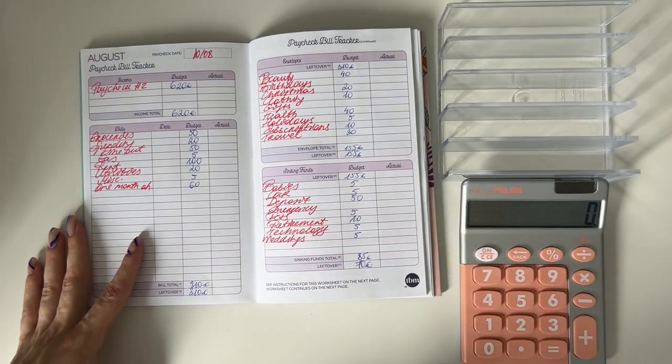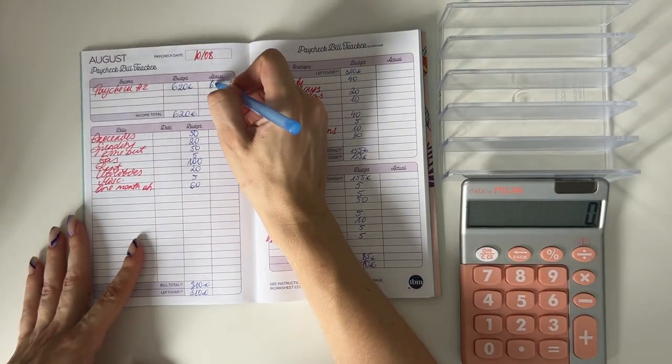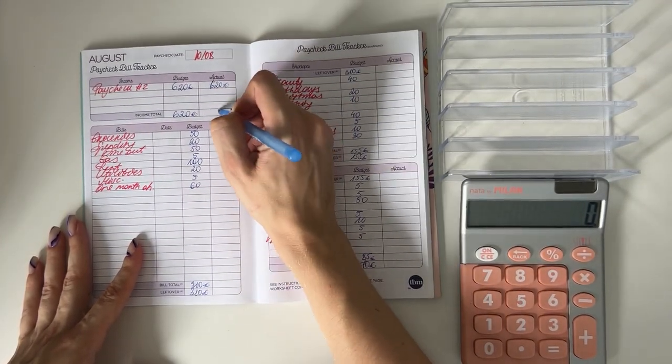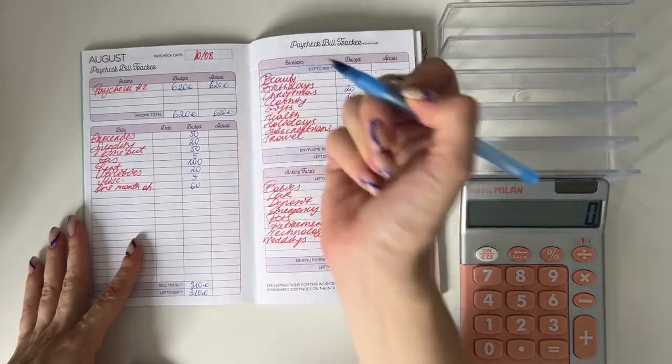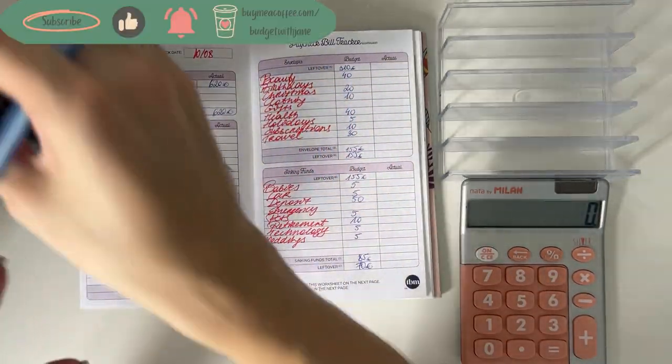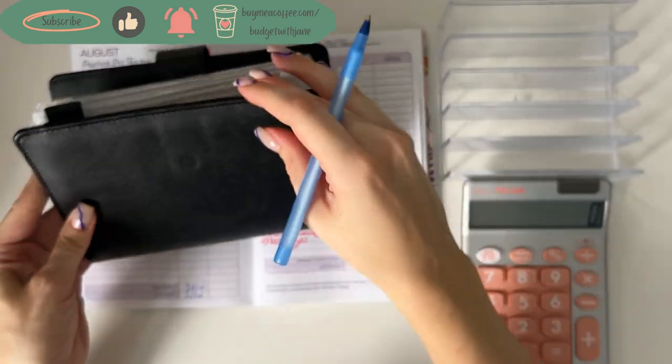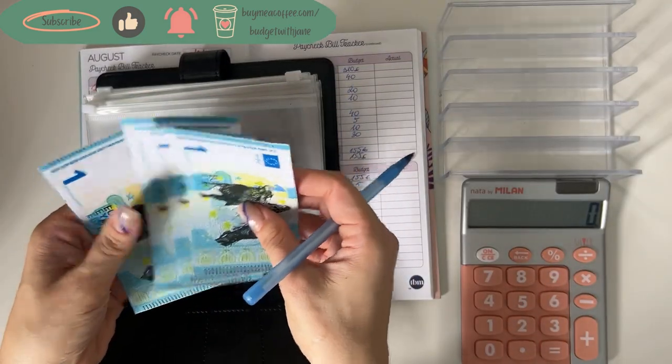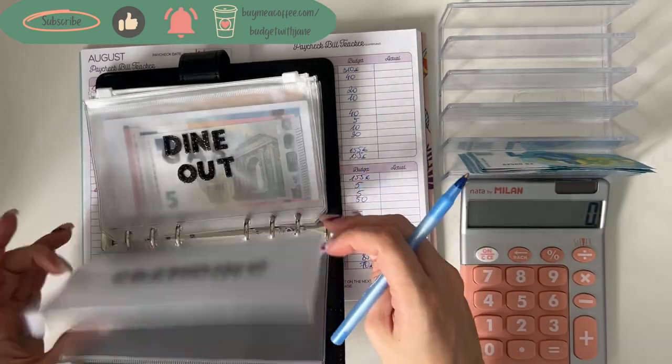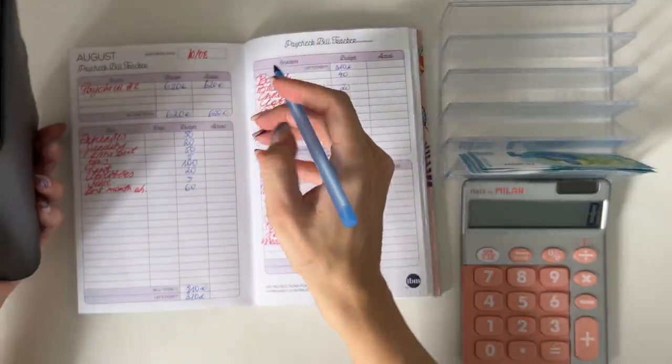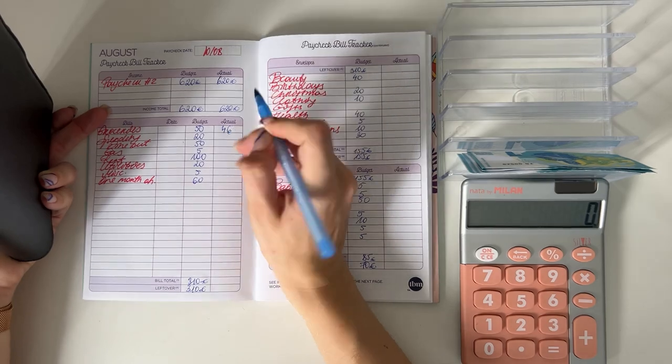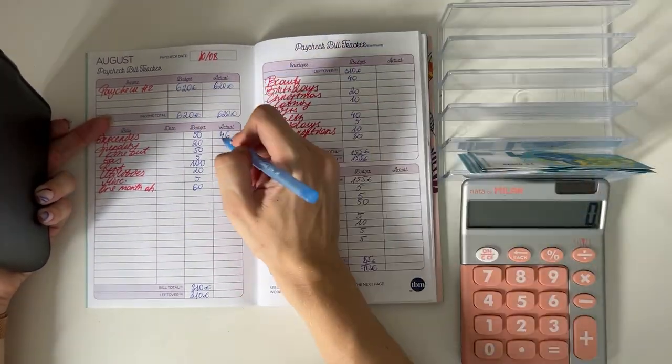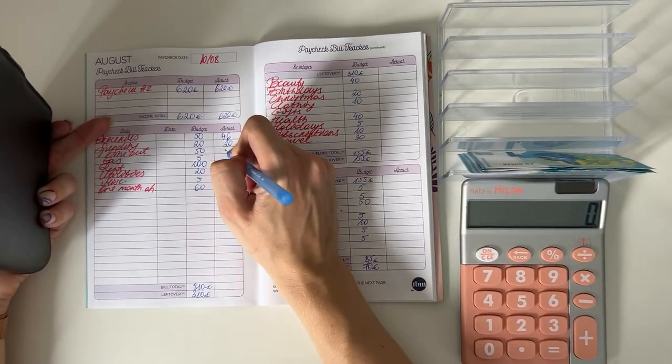This week we had a €620 budget to work with. In groceries, let's see if we have any rollover. We have €4 rollover in groceries and nothing in spending or dine out. So basically that means €46 was spent in groceries, €20 in spending, and €50 in dine out.